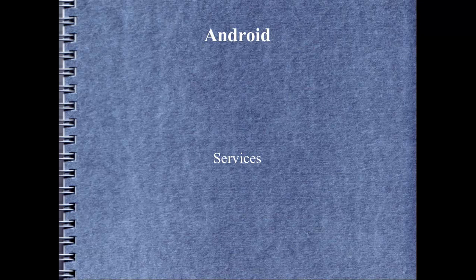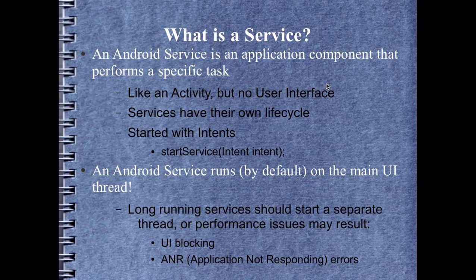Welcome to this Android video series presentation on services. We're going to talk about three types of services. Normal services and bound services are essentially the same thing — they are derived from the same class, Service. We'll also talk about intent services. A service is a component of an application that performs a specific task, or it can share methods of itself with the rest of the application. A service is essentially like an activity but there is no user interface. It is started using an intent and has its own lifecycle, with methods like onCreate and onDestroy.